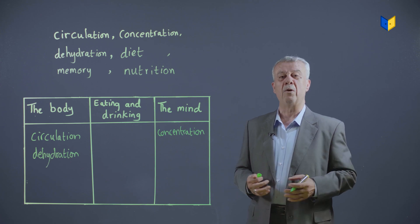And finally, nutrition. عملية التغذية. It is connected with eating and drinking. So, we write it here. Okay. So, the body. Circulation and dehydration. Eating and drinking. Diet and nutrition. The mind. Concentration and memory.